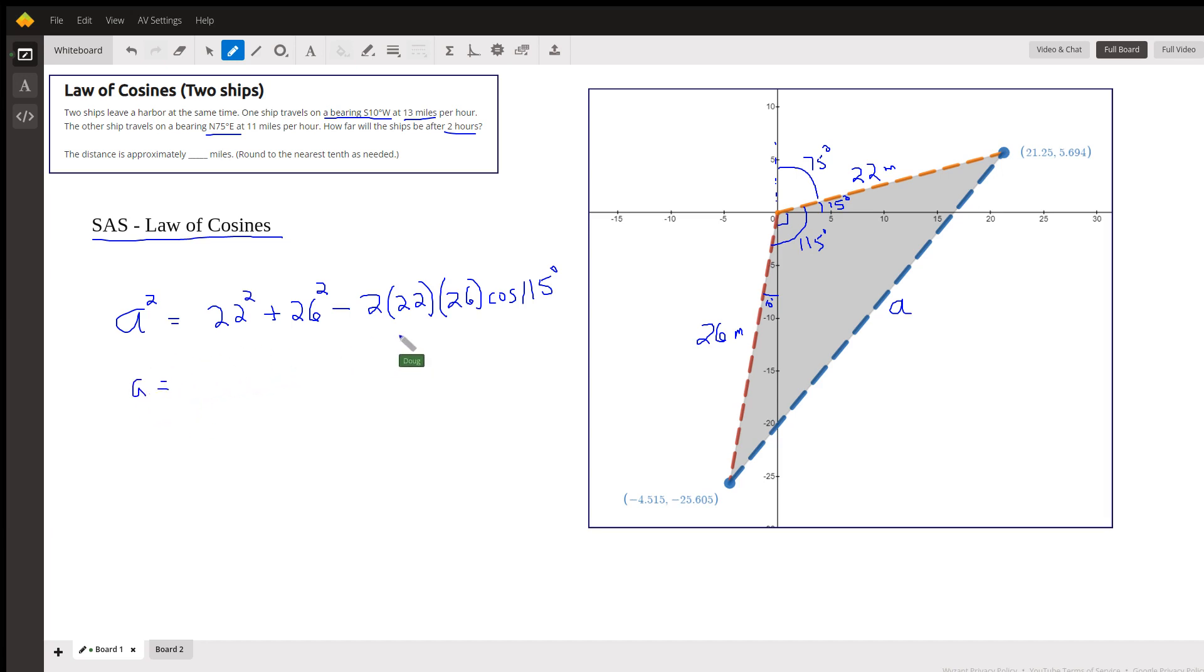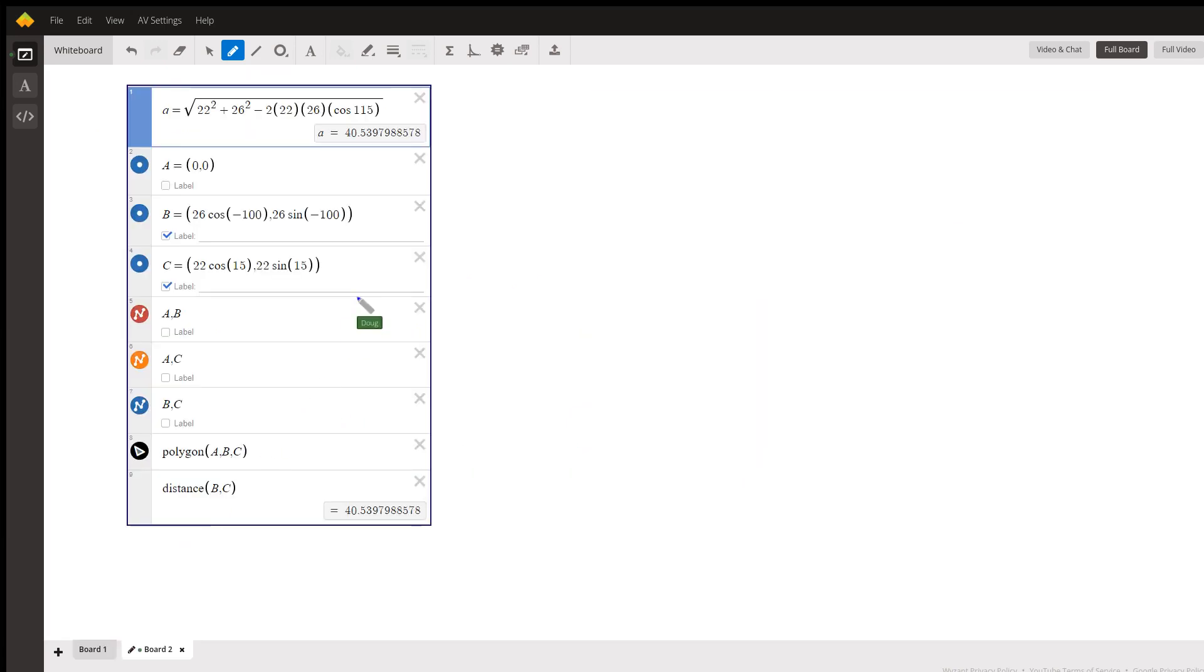To find a, we have to take the square root of all of that. There's the square root of the sum of the squares of the two known sides of the triangle minus two times the product of those two times the cosine of the included angle.